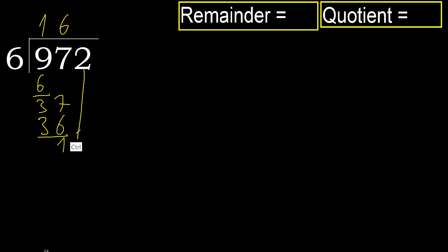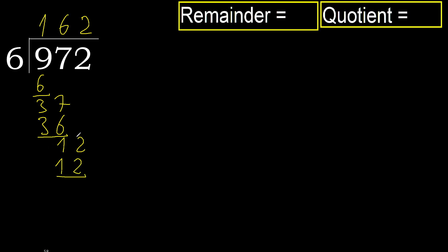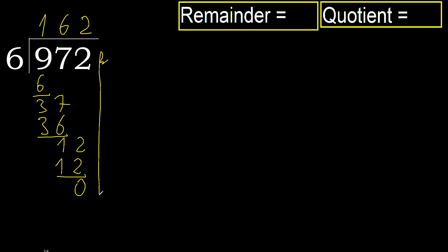Next: bring down to get 12. 6 multiplied by 2 is 12 — not greater. Subtract. There is no next number, therefore we finish it.